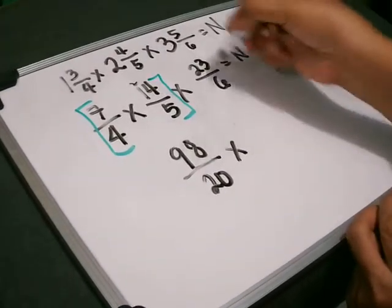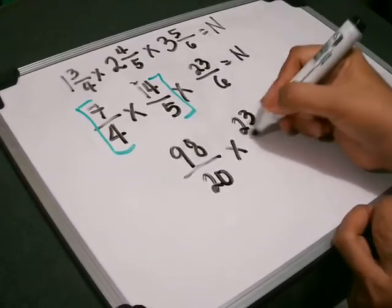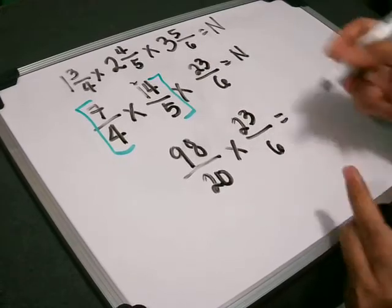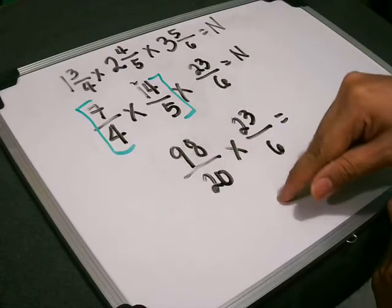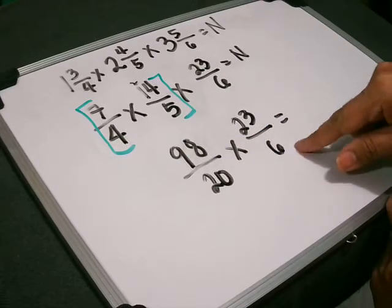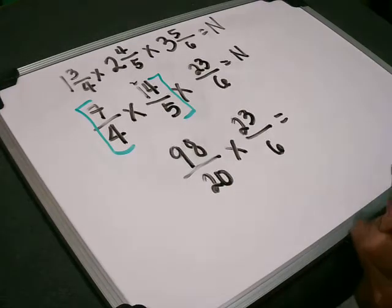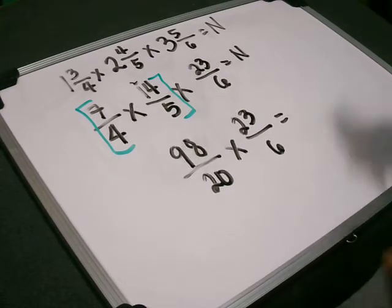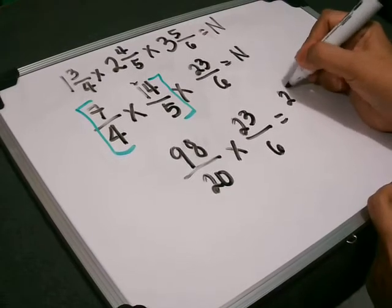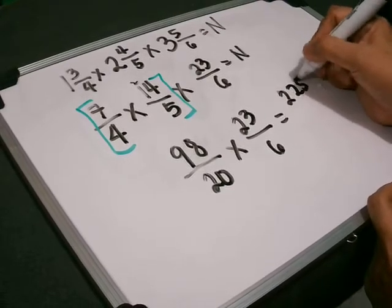Times 23 over 6 equals. We can now multiply. 98 over 20 times 23 over 6. 98 times 23 equals, that would be 2,254.